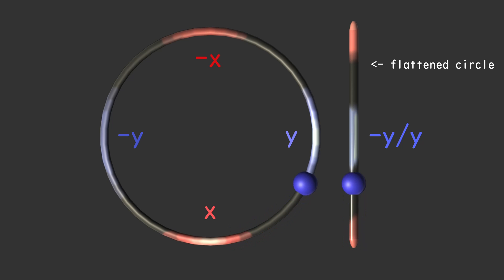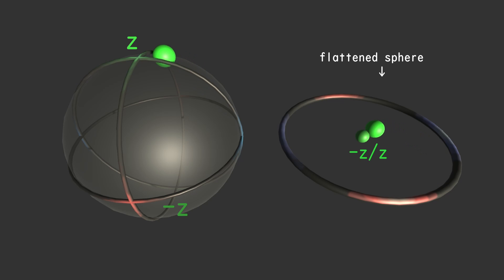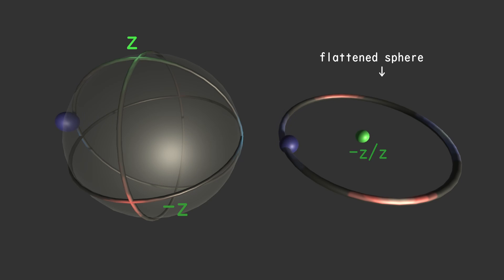These are easier to visualize and one way we can is by flattening dimensions. Here we have a flattened circle on the right where we collapse the y-axis. In 3D we flatten a sphere to a circle by collapsing the z-axis into the green point in the middle. In 4D we flatten the hypersphere to a normal sphere by collapsing the w-axis into the yellow point in the middle.